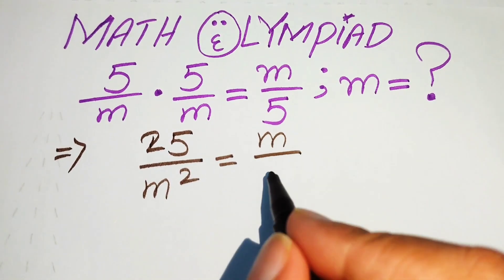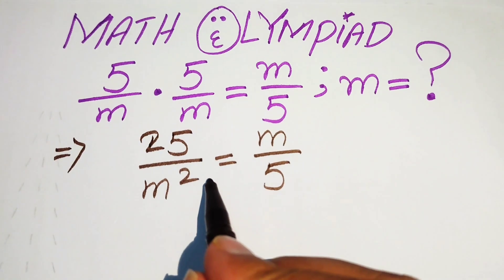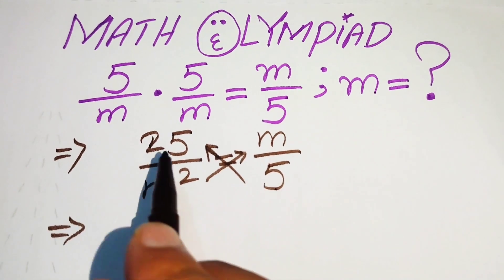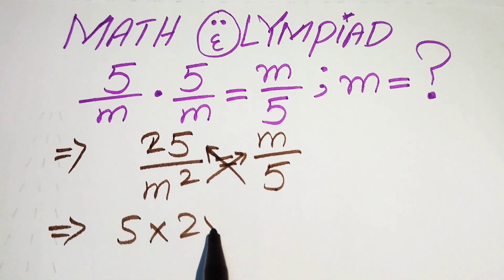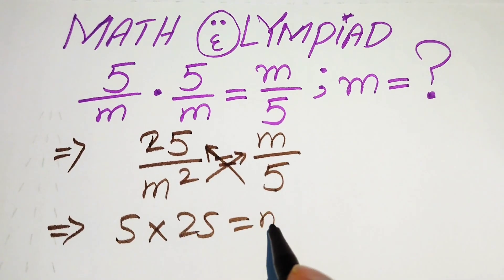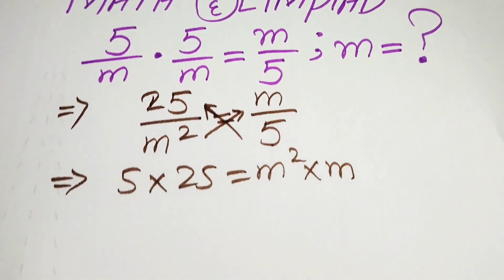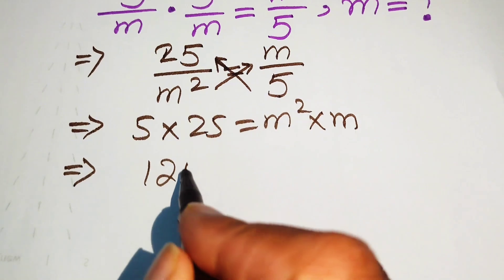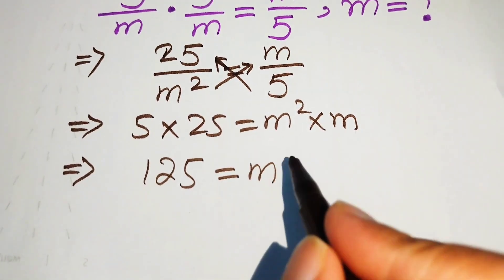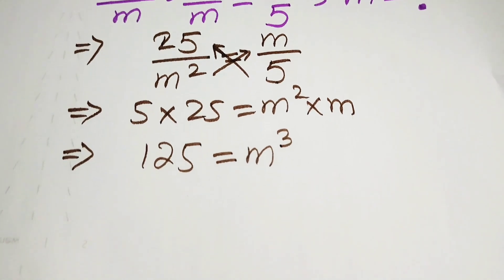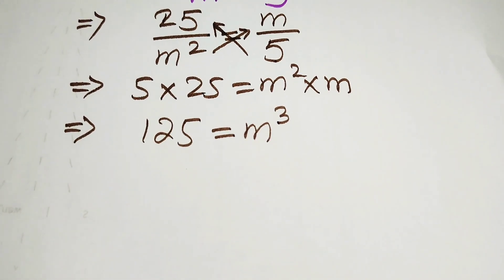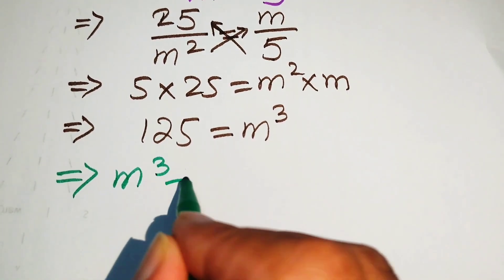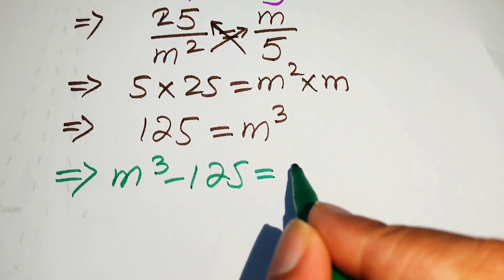In the next step we cross multiply the terms. We multiply 5 by 25 and m squared by m. After this multiplication we get 25 times 5 equals 125, and m squared times m becomes m cubed. Moving 125 to the right hand side gives m cubed minus 125 equals 0.